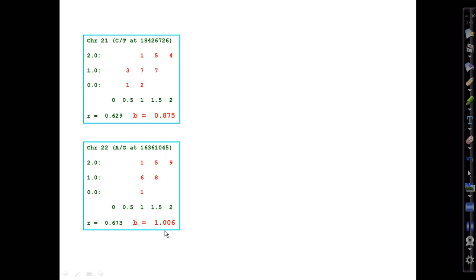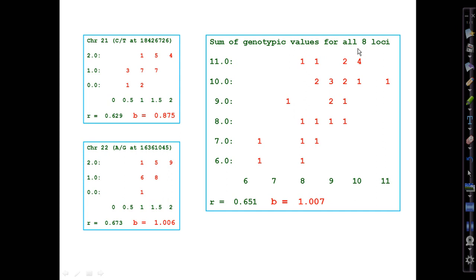Here's the seventh and the eighth locus, typical of the others. And then here's the scatterplot for the summed scores for all eight loci together, where the scores range from 6 to 11. And here, the regression slope is satisfyingly close to 1.0, which is its theoretically predicted value. The correlation, 0.65, is a bit lower than the theoretically expected correlation, which is 1 over the square root of 2, or 0.71, but still close enough for a small data set like this one.